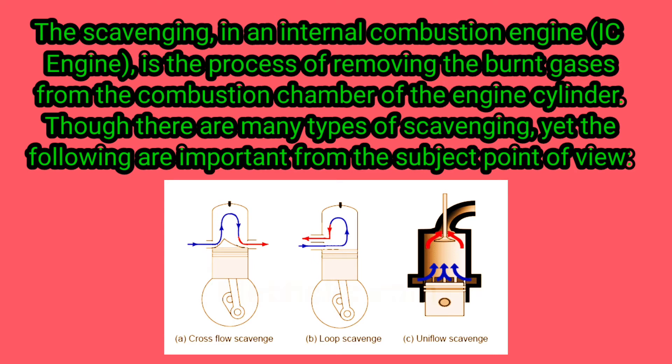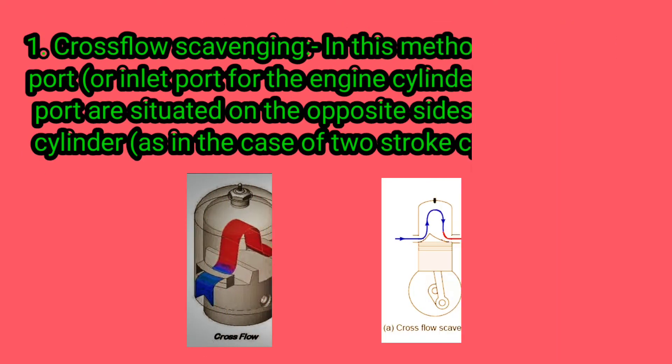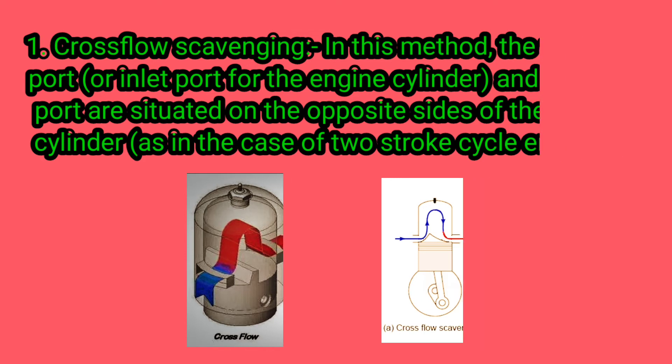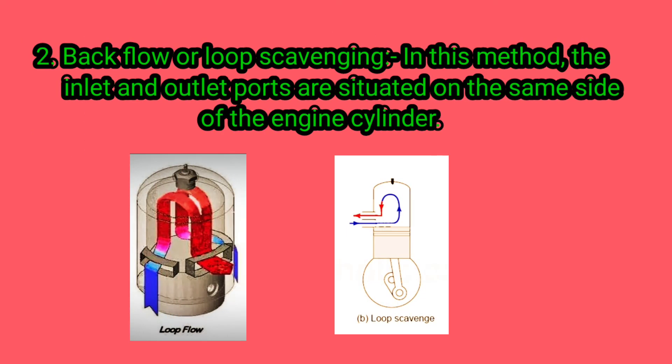1. Cross flow scavenging: in this method, the transfer port or inlet port for the engine cylinder and exhaust port are situated on the opposite sides of the engine cylinder, as in the case of two-stroke cycle engines. 2. Backflow or loop scavenging: in this method, the inlet and outlet ports are situated on the same side of the engine cylinder.